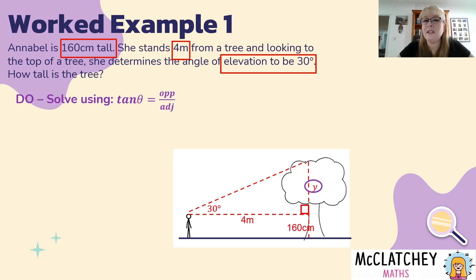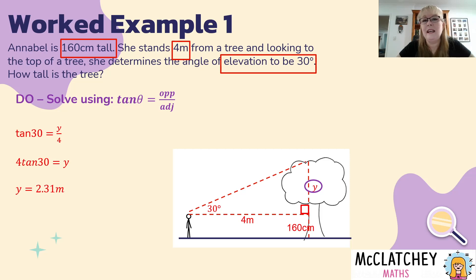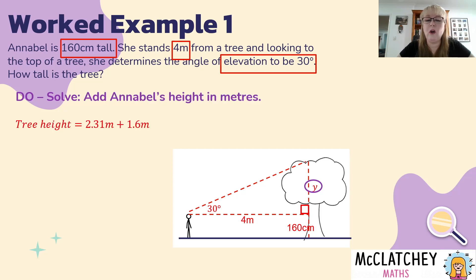Now that we know we're going to use the tangent formula, it's time to substitute the values into the equation. The theta angle is 30 degrees and the adjacent is 4, so tan(30) equals y over 4. We multiply both sides by 4 and get y equals 4·tan(30). Put that into your calculator and you get y equals 2.31 meters. But looking at our triangle, 2.31 meters is just the component not including Annabelle's height. So we need to add the two together: 2.31 plus 1.6 gives 3.91 meters for the full height of the tree.